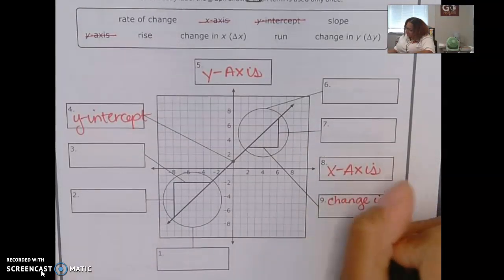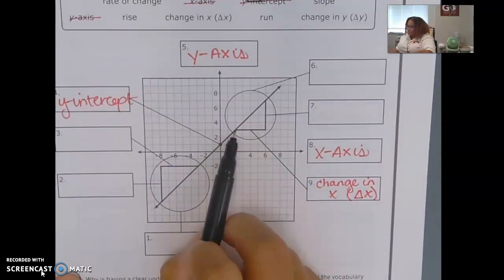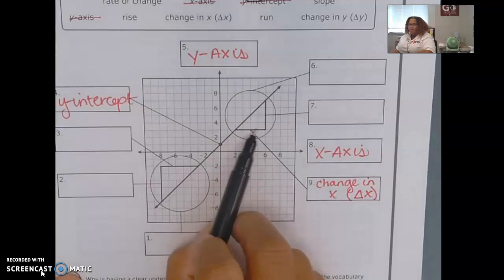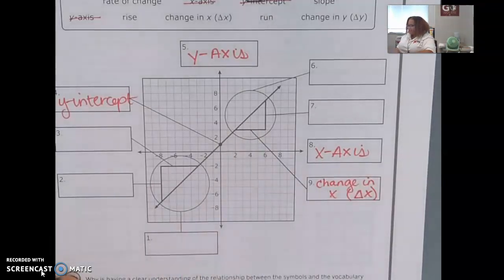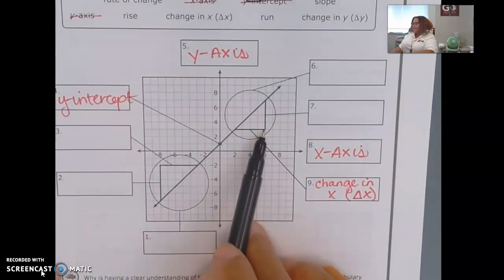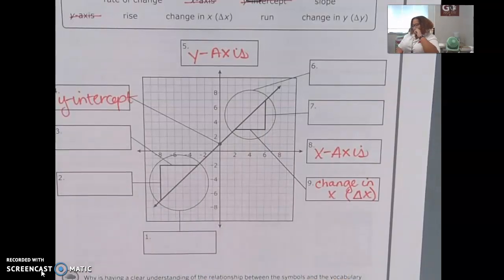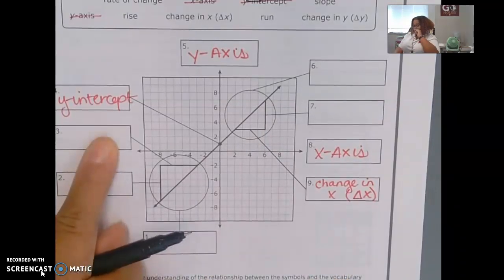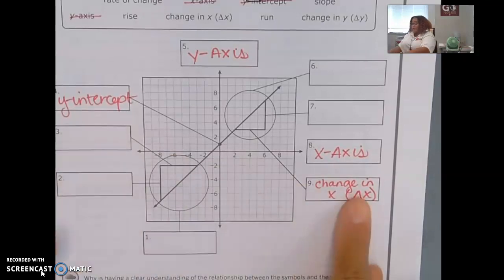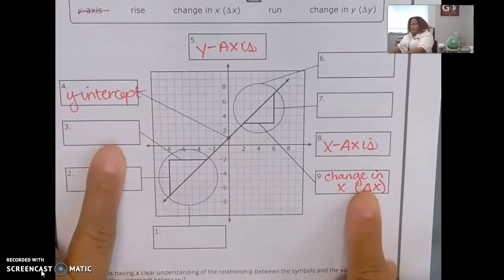Alright, I've got rate of change left, rise, change in x which is delta x, a run, a slope, or a change in y delta y. What you got? That's a change in x, excellent. Change in x, which is delta x. Why is it a change in x? Who is it parallel to? The x-axis, good.